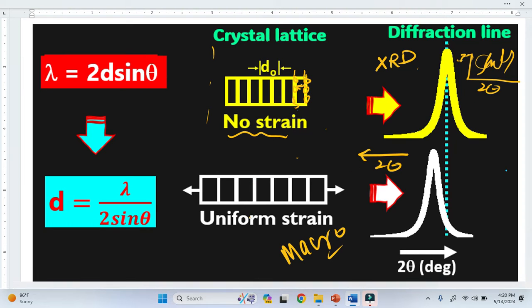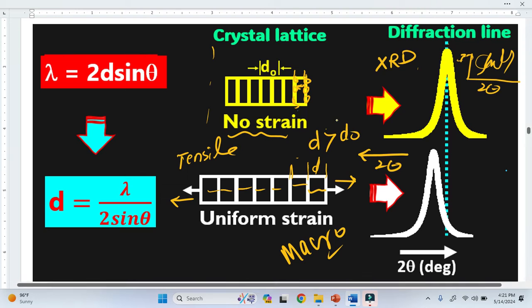Now when there is a uniform strain, this is basically called tensile strain. There is a tensile strain because we elongate this to the left side as well as to the right side. We can see that the strain is basically uniform because this is one plane, this is another plane, this is another plane. And we can see that the distances are equal here throughout the material. So the strains are there but it is uniformly strained in the material. And we can see that this interplanar spacing is greater than the original interplanar spacing here.